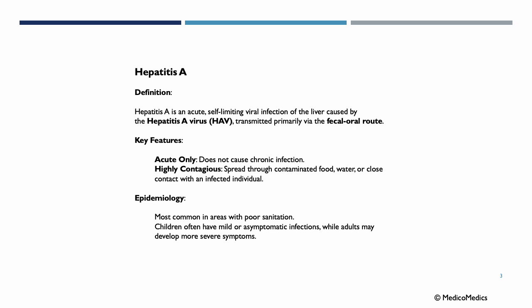Hepatitis A is an acute, self-limiting viral infection of the liver caused by the Hepatitis A virus, transmitted primarily via the fecal-oral route. Key features include that it is acute only — it does not cause chronic infection. Furthermore, it is highly contagious, spreading through contaminated food, water, or close contact with an infected individual. Epidemiologically, it is most common in areas with poor sanitation. Children often have mild or asymptomatic infections, while adults may develop more severe symptoms.